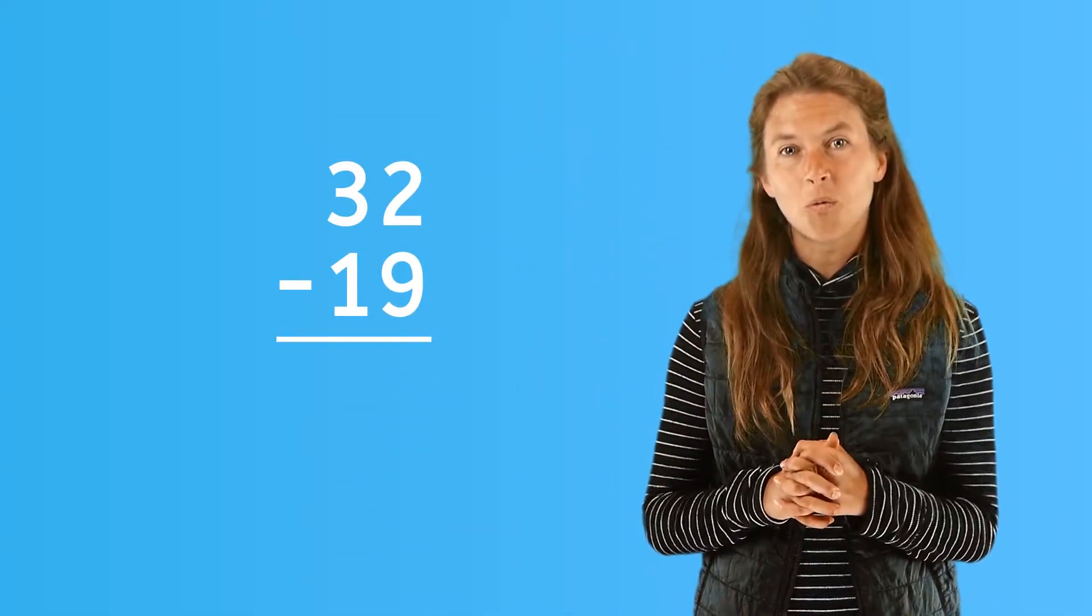Seems pretty simple, but what happens when you run into this situation? When you go to line up the ones and tens, you may notice there are two ones in 32, and nine ones in 19. There are not enough ones in 32 to subtract the nine ones in 19.